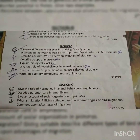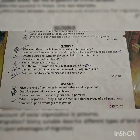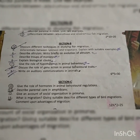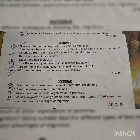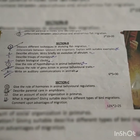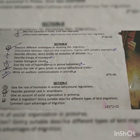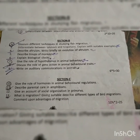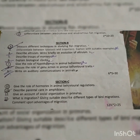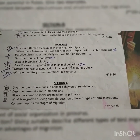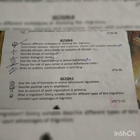Section B. Second question: Discuss different techniques in studying fish migration. Third: Differentiate between telotaxis and tropotaxis, explain with suitable examples. Fourth: Describe altruism and write briefly on the evolution of altruism.